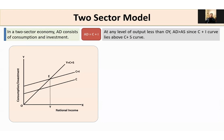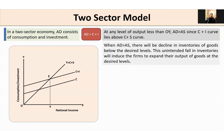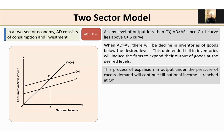At any level of output less than OY, aggregate demand is greater than aggregate supply, since the C plus I curve lies above the C plus S curve. When aggregate demand is greater than aggregate supply, there will be a decline in inventories of goods below the desired level. This unintended fall in inventories will induce firms to expand their output. This process of expansion in output under the pressure of excess demand will continue until national income reaches OY.